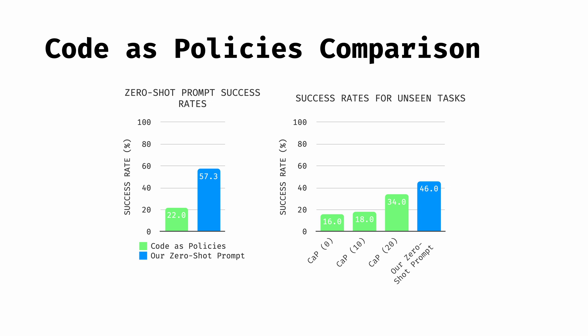This can be seen on the left, where we compare the performance of the original Code as Policies prompt on the 30 tasks against our zero-shot prompt. And on the right, where we see the success rate on unseen tasks increasing, as we append more in-context examples to the original Code as Policies prompt. But even with 20 additional in-context examples, we see that its unseen task performance is still lower than that of our zero-shot prompt, which does not contain any in-context examples.